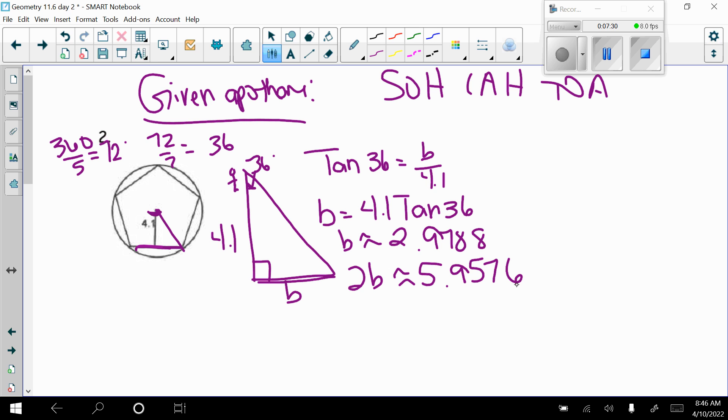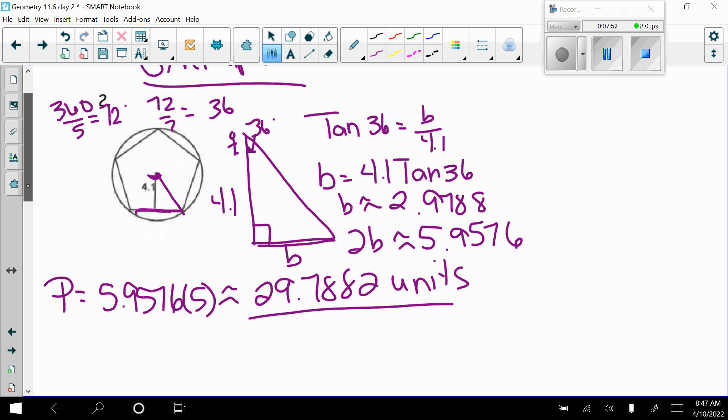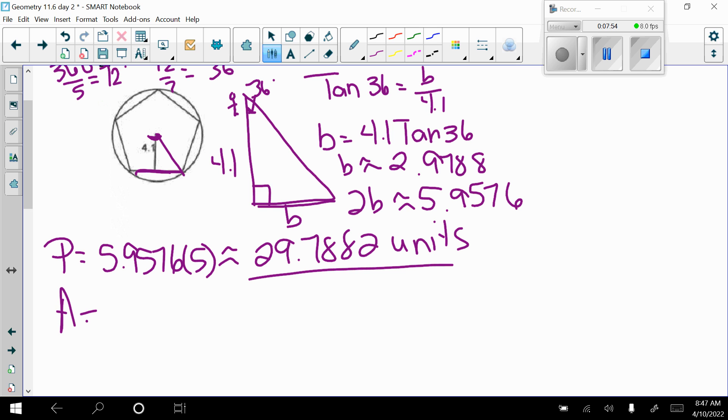So now I can find my perimeter. My perimeter is equal to 5.9576 times 5, because there are 5 sides. So my perimeter is approximately 29.7882 units. There's our perimeter. I want the area. My area is one half my apothem, which they told me was 4.1, times the perimeter. So when I multiply all of that together, I get approximately 61.1 square units.